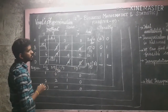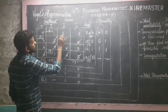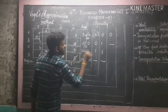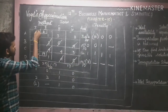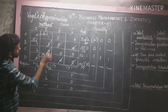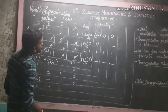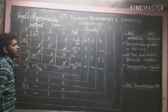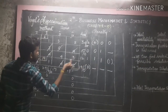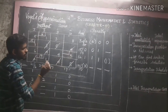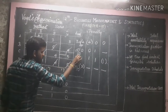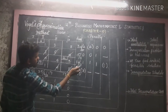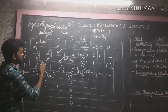For the fourth allocation, we recalculate penalties. Row penalties: 3 minus 3 equals 0, 4 minus 3 equals 1. Column penalties: 6 minus 5 equals 1, 4 minus 3 equals 1, 3 minus 3 equals 0. The highest penalty is 1. The lowest value in the corresponding row is 3. Comparing 12 and 17, we take 12. After allocation: 12 minus 12 equals 0 and 17 minus 12 equals 5. The corresponding row is cancelled.